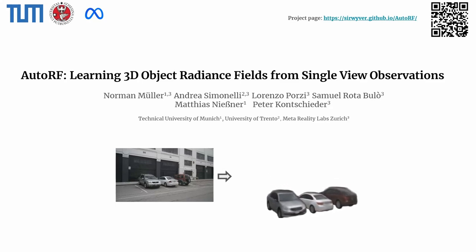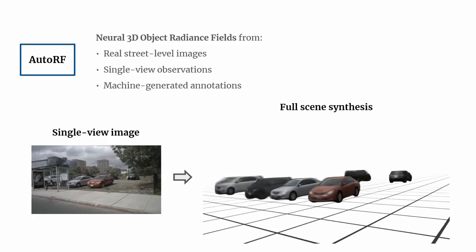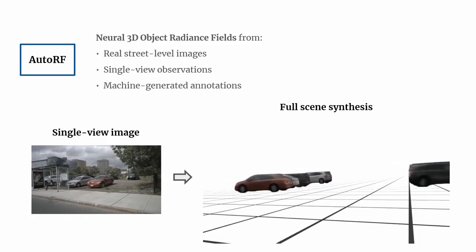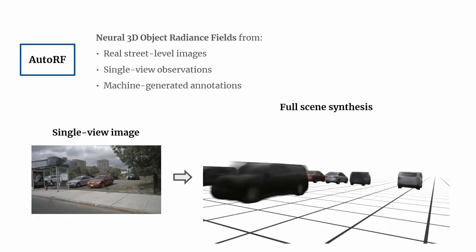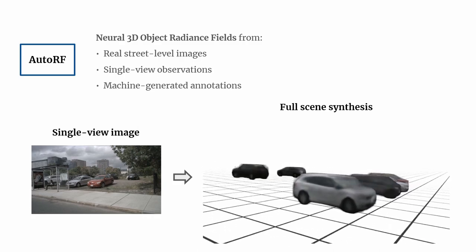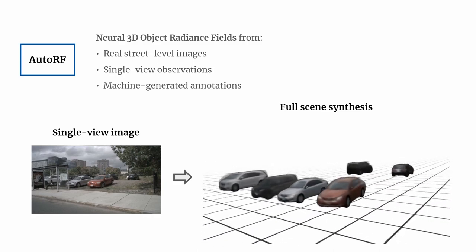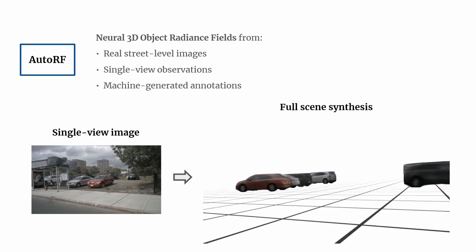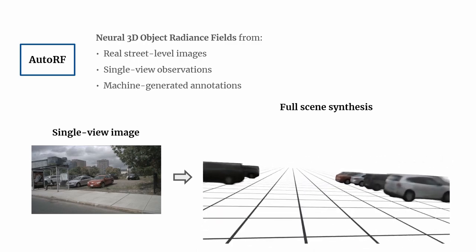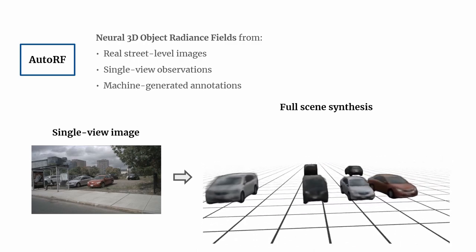We present AutoRF, a novel approach for learning 3D object radiance fields from single view observations. AutoRF is the first approach for novel object view synthesis, trained fully on single real street-level observations and machine-generated annotations only. It enables full scene synthesis even in highly occluded regions without relying on multi-view correspondences at any time.